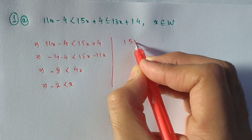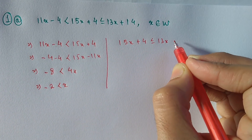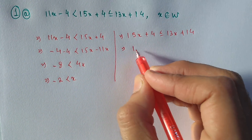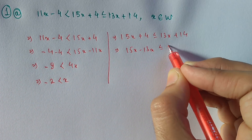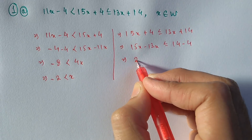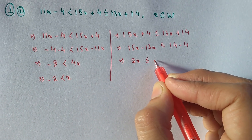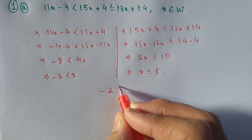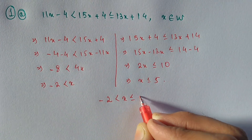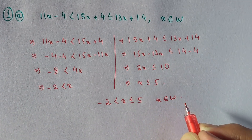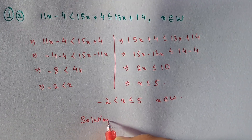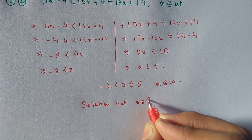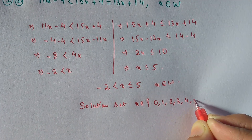Solving the second part: 15x plus 4 is less than or equal to 13x plus 14. Rearranging: 15x minus 13x is less than or equal to 14 minus 4. Therefore, 2x is less than or equal to 10, so x is less than or equal to 5. Combining both results: x is greater than minus 2 and less than or equal to plus 5, where x belongs to whole numbers. The solution set is {0, 1, 2, 3, 4, 5}.